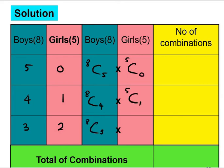Now we have 8C5 times 5C0, here we have 8C4 times 5C1, and here we have 8C3 multiply with 5C2. The number of combinations here when we calculate we're going to get 56 here, and then here is 350, and here will be 560.